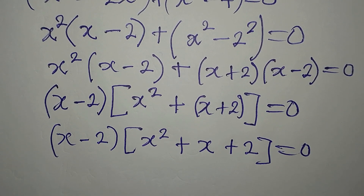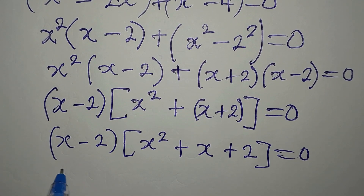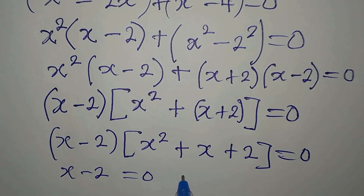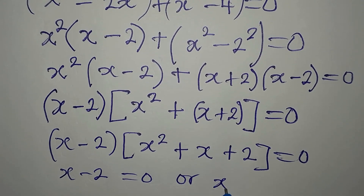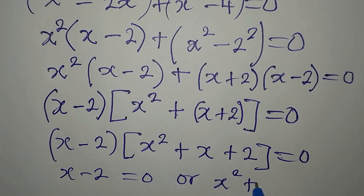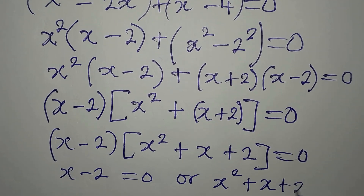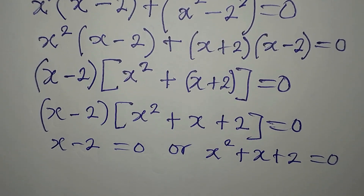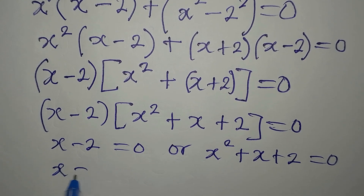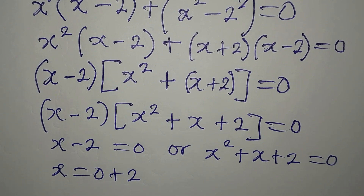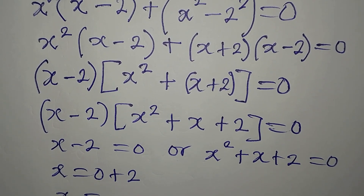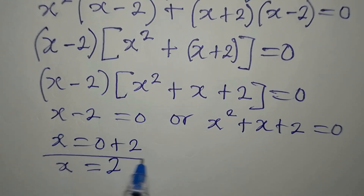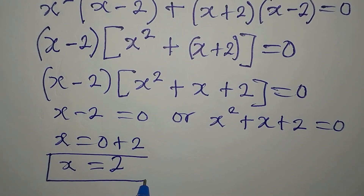Since we are multiplying two terms to get zero, either of them equals zero. So x minus 2 equals 0, giving x equals 2. That is the real solution to this problem.